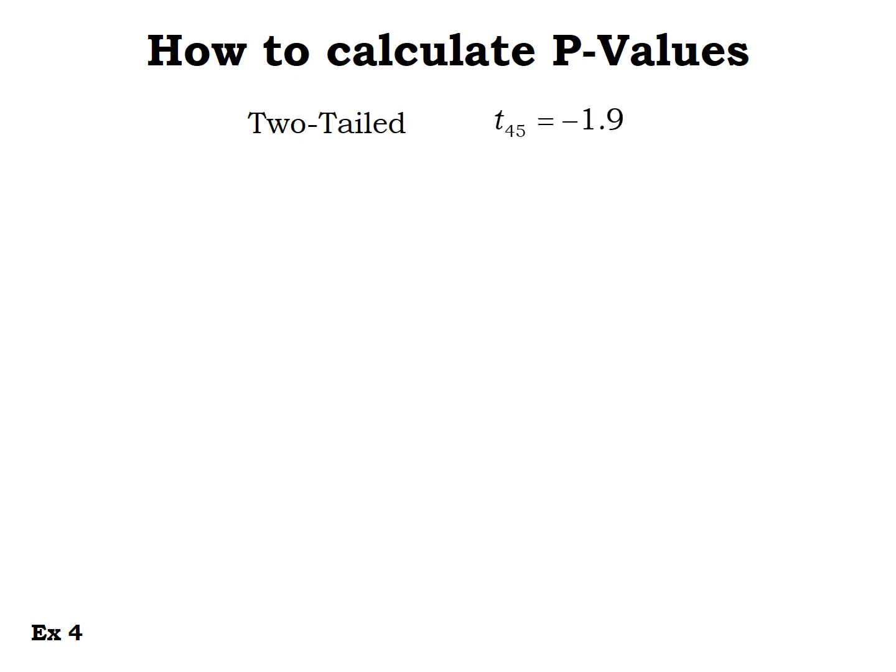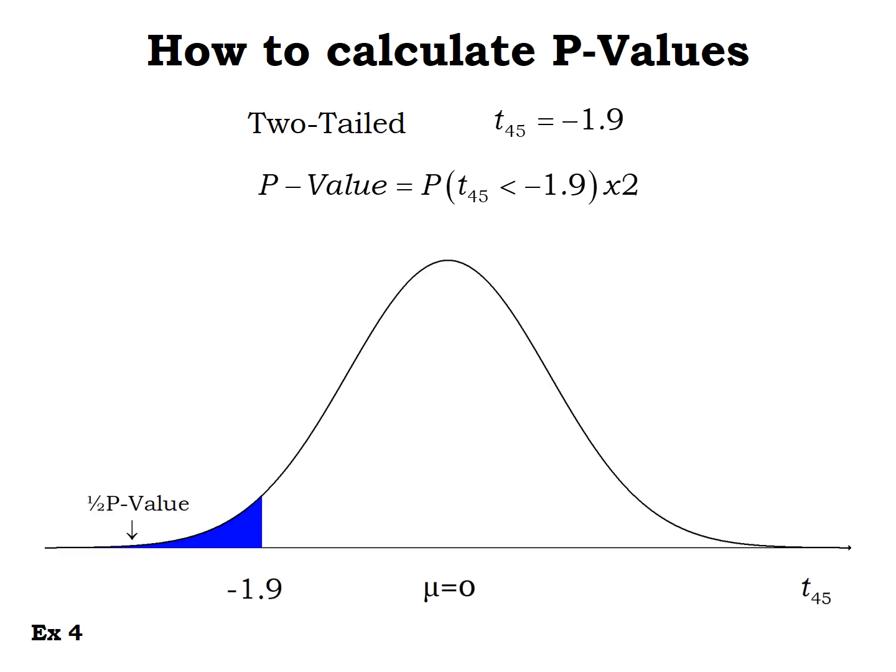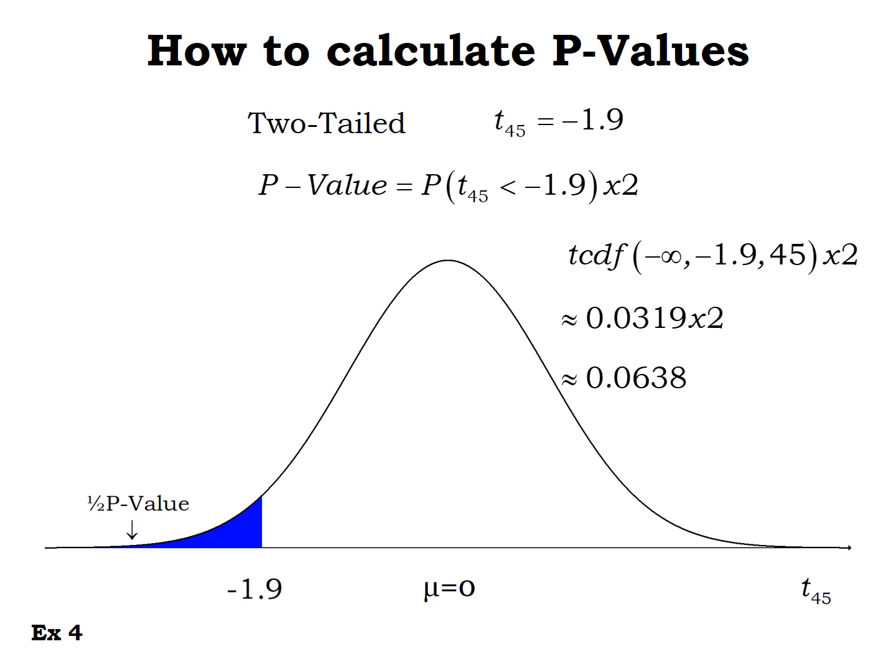For a two-tailed test with t-score negative 1.9, since negative 1.9 is in the left tail, we find the probability to the left and double it. The area to the left of negative 1.9 is half of our p-value, representing one of the two tails. Using t-CDF we get 0.0319, multiply by two, and the p-value is 0.0638.